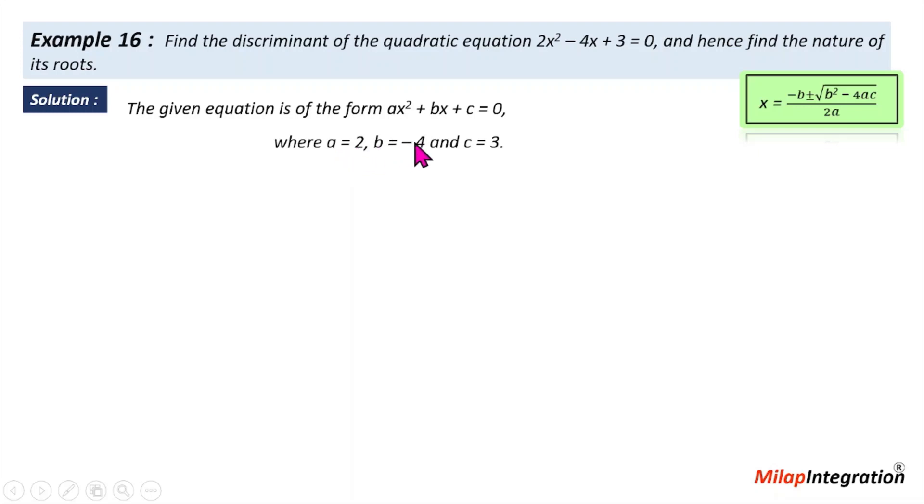Here, a = 2, b = -4, and c = 3. Therefore, the discriminant is b² - 4ac. If we solve, what we will get: 16 - 24, which equals -8, which is less than 0.